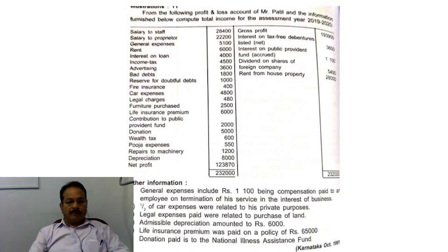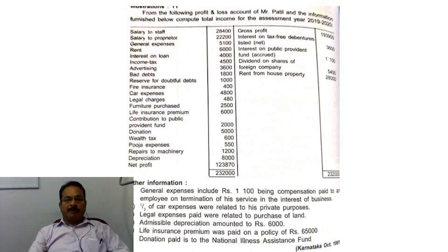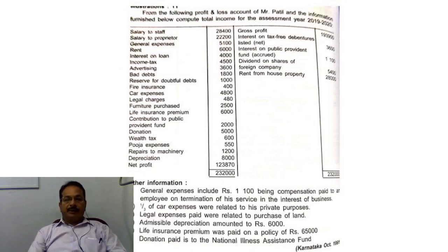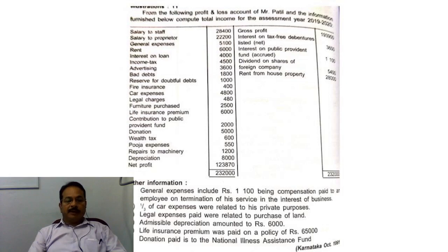Welcome dear friends. Let us solve the next problem on assessment of individuals. You have been given the profit and loss account of an individual, Mr. Patel, and you are required to compute his total income. First, have a look at the credit side of the profit and loss account — on the credit side there is gross profit.